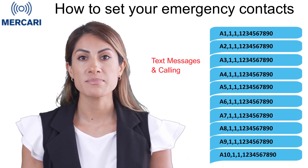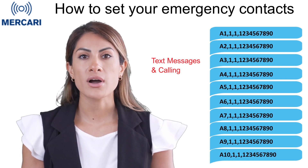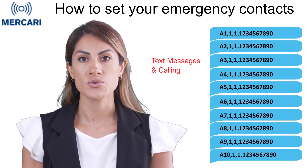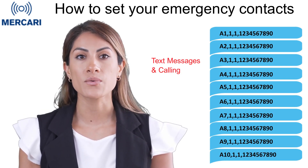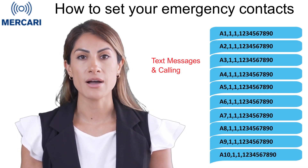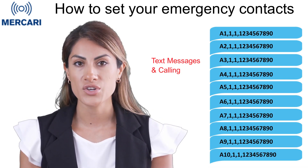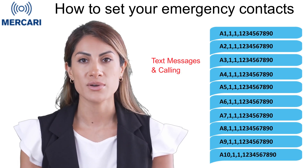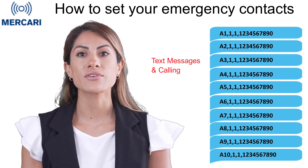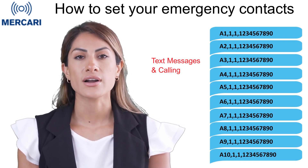The device will respond back confirming 'set contact number 1 OK'. To set the second priority number, you would send A2,1,1, followed by the phone number of your second priority person. You carry on the sequence — A3, A4, A5, etc. — until your emergency contacts are complete.